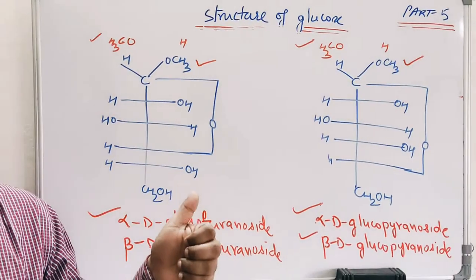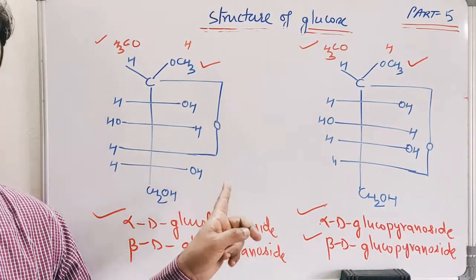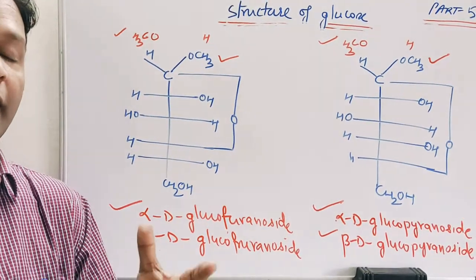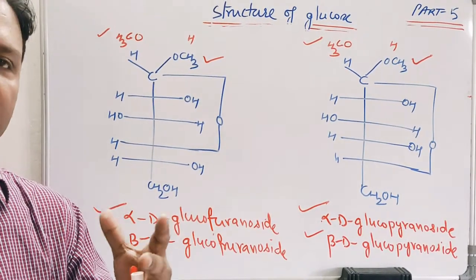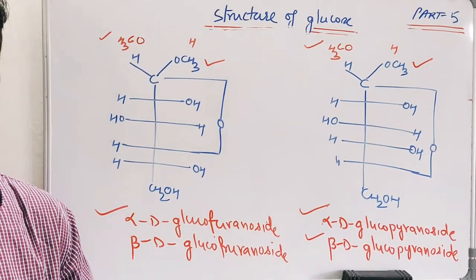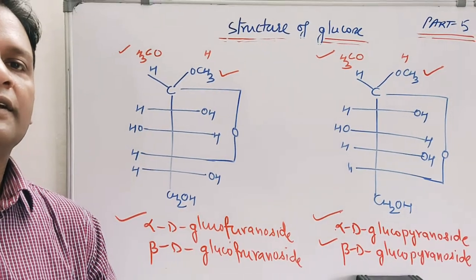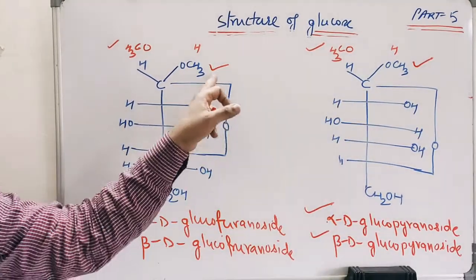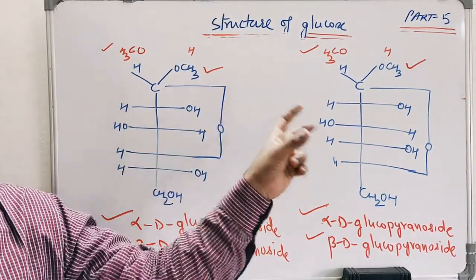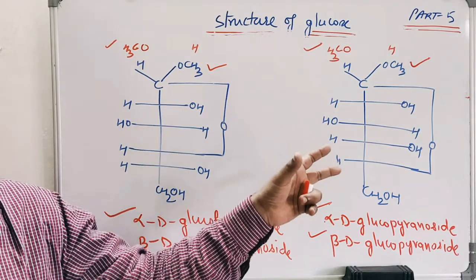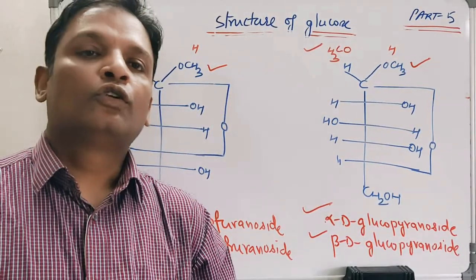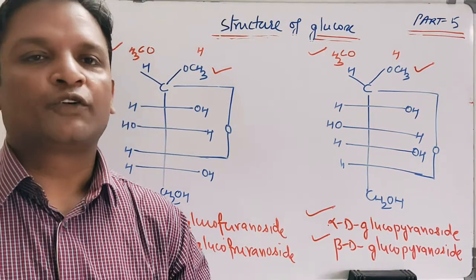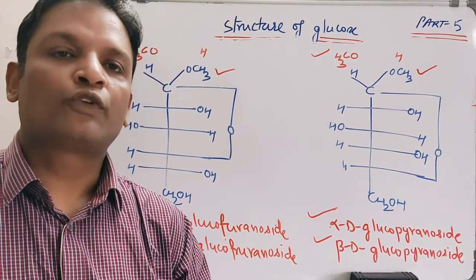One main difference you should note: pyranose means hemiacetal, and pyranoside means acetal. I repeat — pyranose means hemiacetal and pyranoside means acetal. Structure to name, or name to structure, should be clear to all of you, because questions from this section always come in your exam: write the structure of a given compound or write the name of a given compound. With this I say thanks to all of you for watching. Thank you very much.